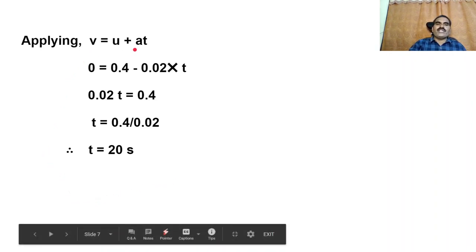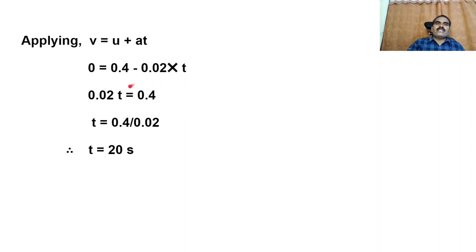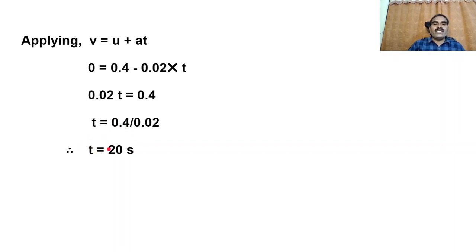Using the equation V equals U plus AT: V is 0, initial velocity is 0.4, A is minus 0.02 into T. By simplifying, bring 0.02T to the left side: plus 0.02T equals 0.4. So T equals 0.4 divided by 0.02. Therefore T equals 20 seconds.